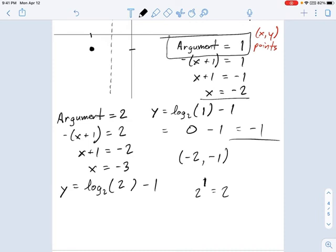And any log, I'll write it this way, any log of any base, where the argument is also the base, is always going to be one. That's one of your basic log properties. So, what that means is, we have y equals one minus one, which is zero.